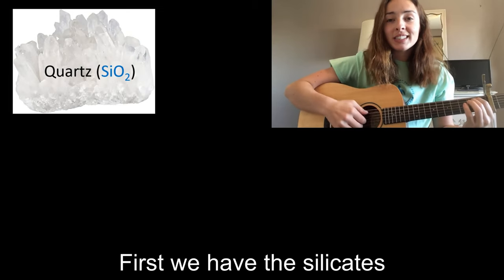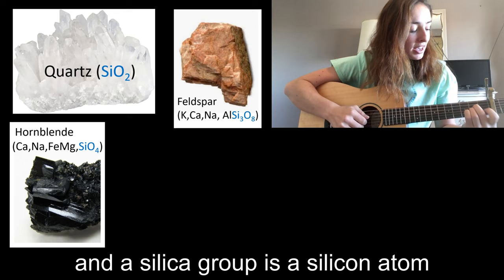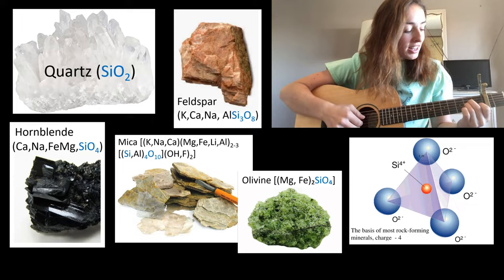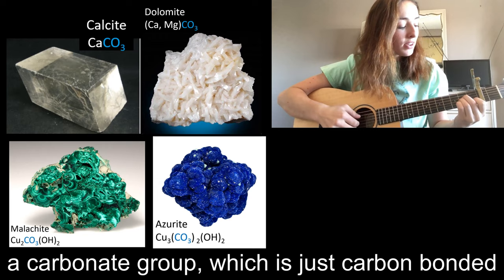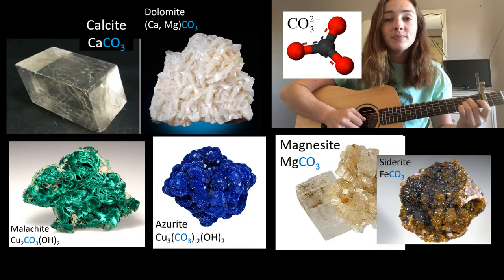First we have the silicates, which are minerals that contain silica groups. A silica group is a silicon atom bonded to four oxygens. The next group of minerals is the carbonate minerals, which have a carbonate group — that's just carbon bonded to three oxygens.